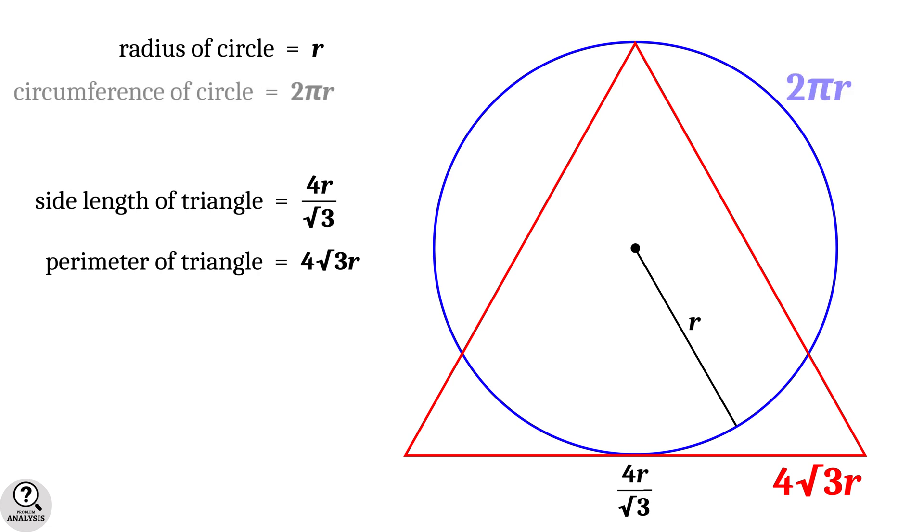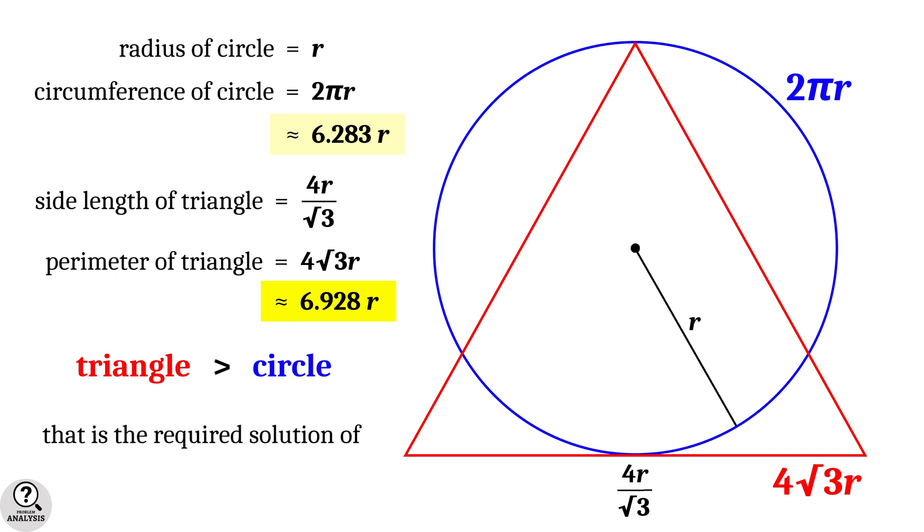Now remember that circumference of the circle is 2πr, which is approximately equal to 6.283 times r. But perimeter of the triangle is 4 root 3 into r, which is approximately equal to 6.928 times r. So comparing these two values, it is clear that 6.928r is greater than 6.283r. That is the equilateral triangle has larger perimeter than the circle. And that is the solution we are looking for.